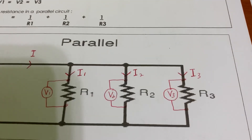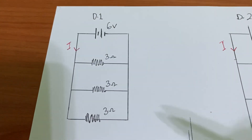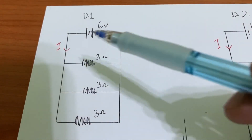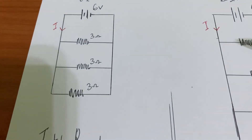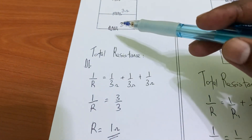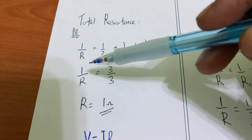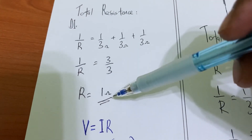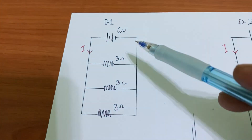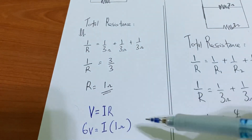For example, I have a circuit with a source voltage of 6 volt and three resistors of 3 ohm, 3 ohm, and 3 ohm. Solving for total resistance: 1 over R equals 1 over 3 plus 1 over 3 plus 1 over 3, which gives 1 over R equals 3 over 3. So R equals 1 ohm — the total effective resistance of this parallel circuit is only 1 ohm.